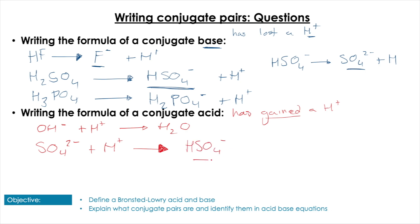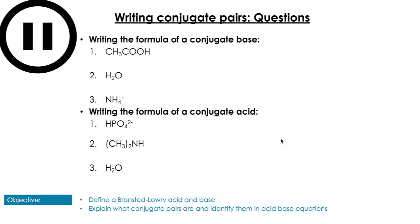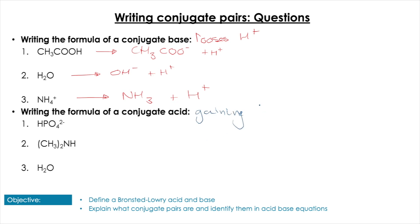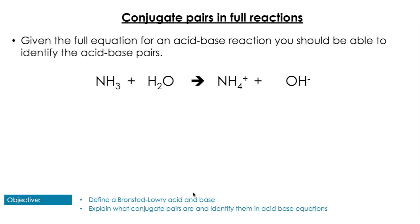Here are some practice questions — pause the video to have a go. Going through the answers: the conjugate base of CH₃COOH is CH₃COO⁻ plus H⁺; for H₂O it's OH⁻ plus H⁺; for NH₄⁺ it's NH₃ plus H⁺. For conjugate acids: HPO₄²⁻ gains a proton to form H₂PO₄⁻; NH₂⁻ gains a proton to form NH₃; and H₂O gains a proton to form the hydronium ion H₃O⁺.